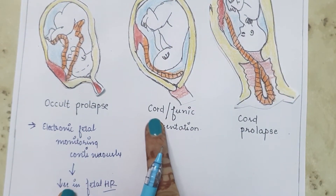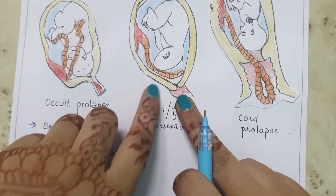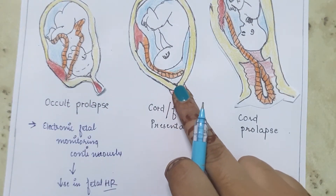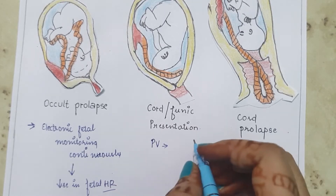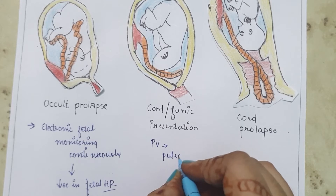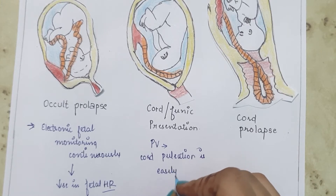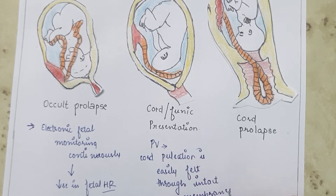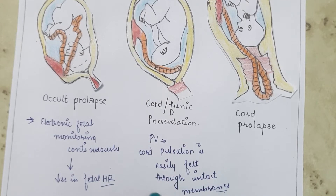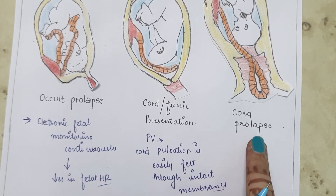Moving to our next type, cord presentation or funic presentation. In this case, while doing pervaginal examination, cord pulsation is felt through the intact membranes. During pervaginal examination, pulsation or cord pulsation is easily felt through intact membranes, because in this case membranes usually remain intact.